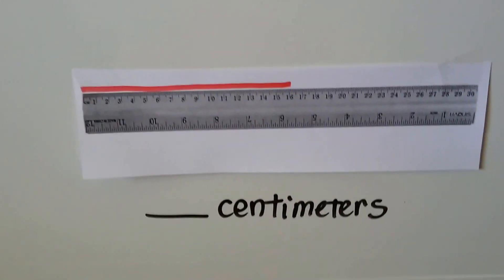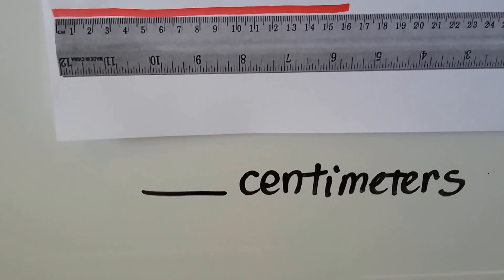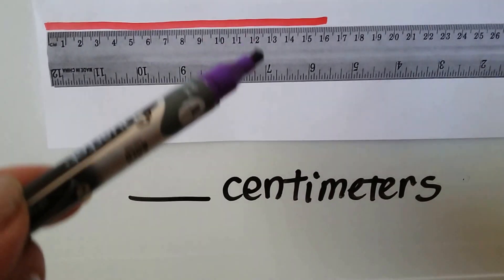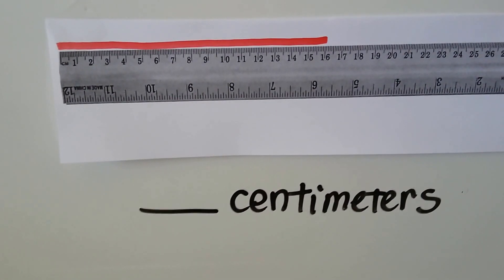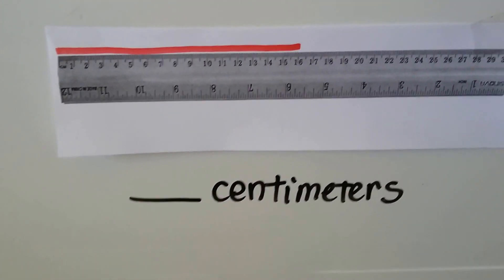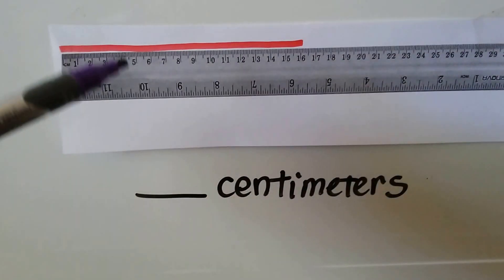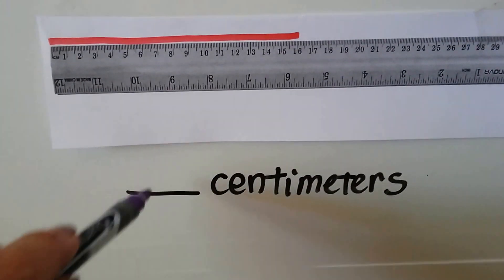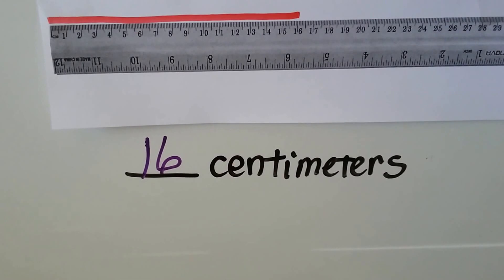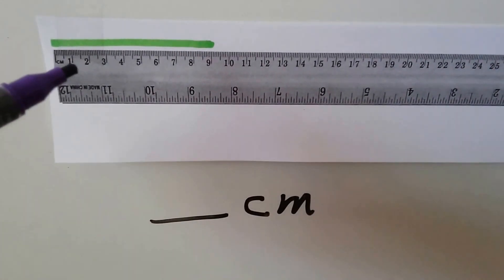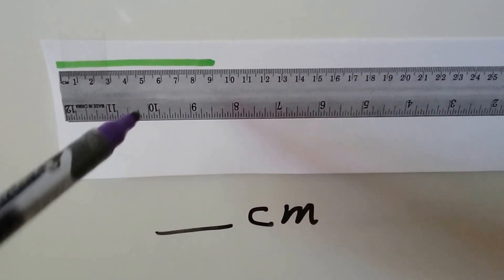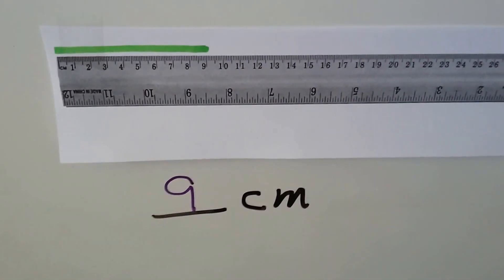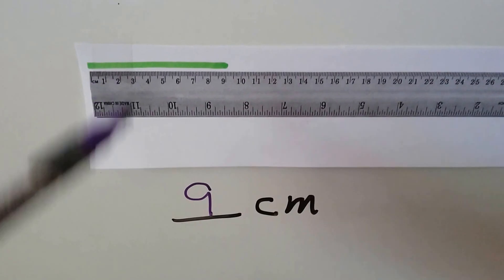Let's try some metric. This red line is about how many centimeters? We flip the ruler over — here was the inches side, and now this is the centimeters side. If you said 16, you're right — it's about 16 centimeters. How about this green line? Here are our centimeters. If you said nine, you're right — it's about nine centimeters, going right up to the nine on the centimeter side of the ruler.